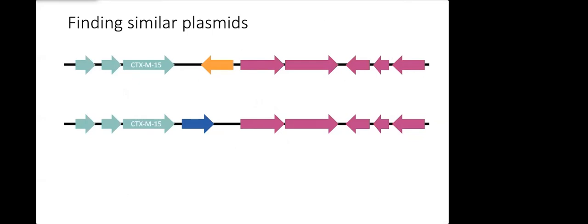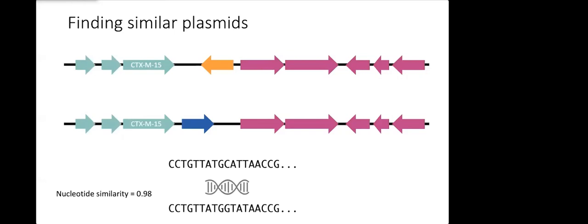Here I have an example of two CTX-M-15 plasmids. The first comparison that we would do for each pair was to compare their nucleotide sequences and we would then get a nucleotide similarity score which fell between zero and one, one being identical and zero being not the same at all.